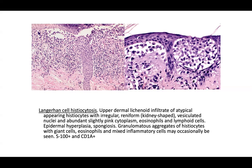This case represents Langerhans cell histiocytosis. On board exams they'll show H&E and expect you to get it by process of elimination. Classic features include: upper dermal lichenoid infiltrate of atypical histiocytes with irregular reniform or kidney-shaped circulated nuclei, abundant slightly pink cytoplasm, eosinophils, lymphoid cells, and epidermal hyperplasia with spongiosis. You need the clinical context as well.